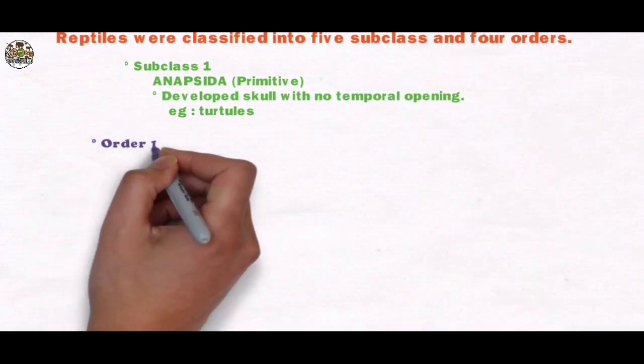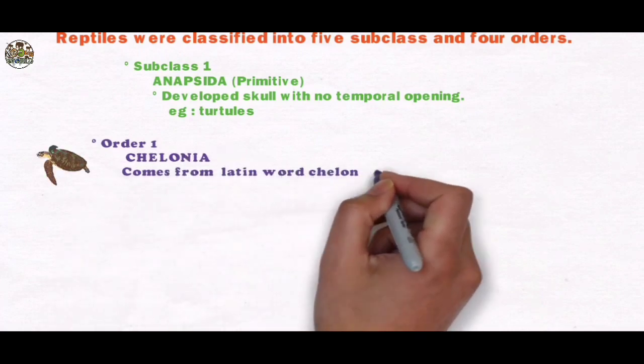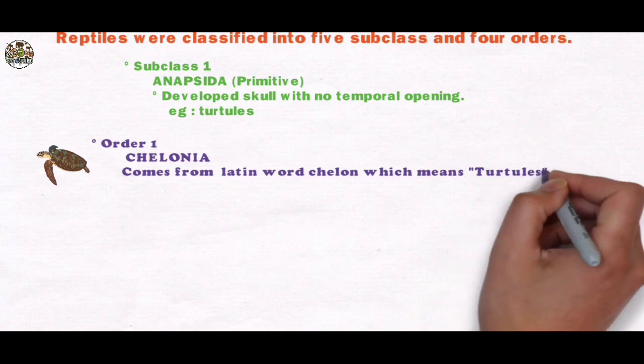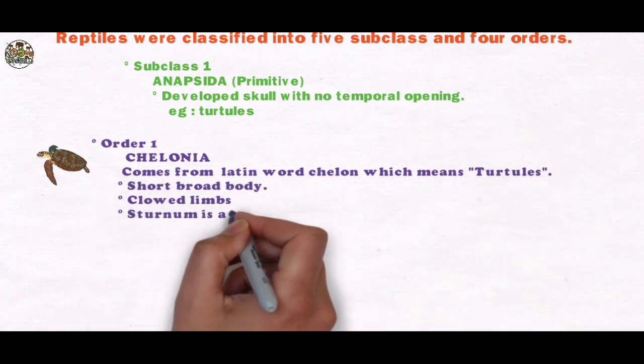Order 1: Chelonia. The name comes from the Latin word calon, which means turtles. They are basically short, broad body, broad limbs. Sternum is absent.